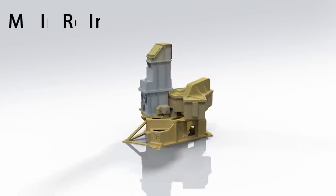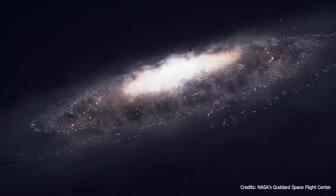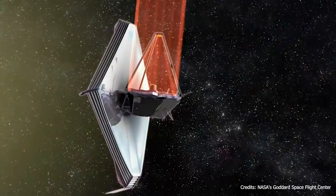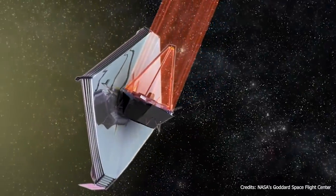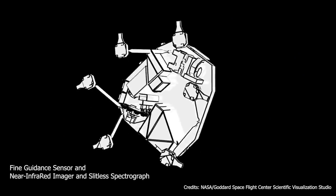Then there's the mid-infrared instrument, or MIRI, which will observe the red-shifted light of distant galaxies, newly forming stars, faintly visible comets, and objects in the Kuiper belt.